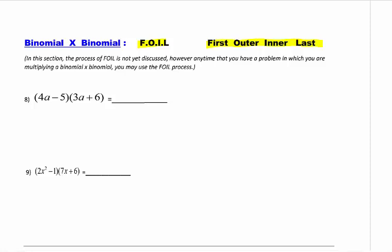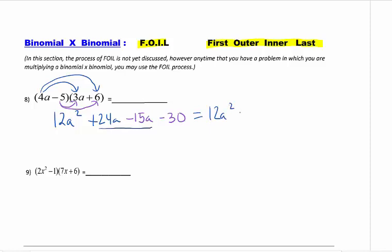I like to draw arrows. So my first means 4a times 3a, which is 12a squared. My outer is 4a times 6, which gives me 24a. My inner is negative 15a, and my last is negative 30. Double check your signs. Really easy to make a mistake there. And not all the time, but often you can add the two middle terms together. So I get 12a squared. Remember, we keep the variable, 24 minus 15.